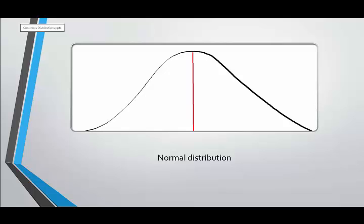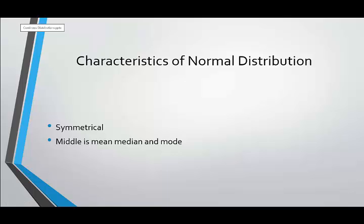Some of the characteristics of the normal distribution that are important are that it's symmetrical. So the two halves are mirror images of each other, and that red line down the middle of the normal distribution is the mean, it's also the median and the mode.